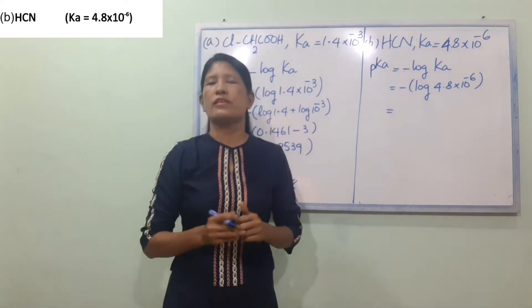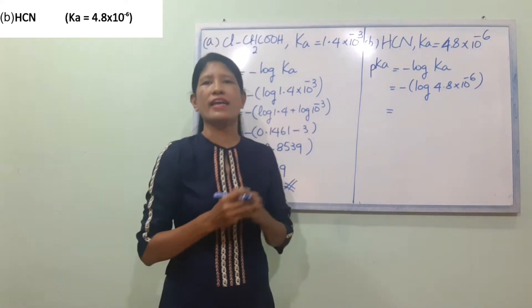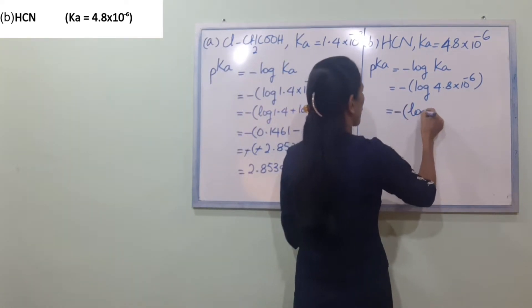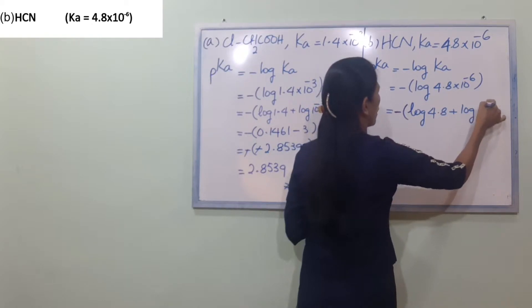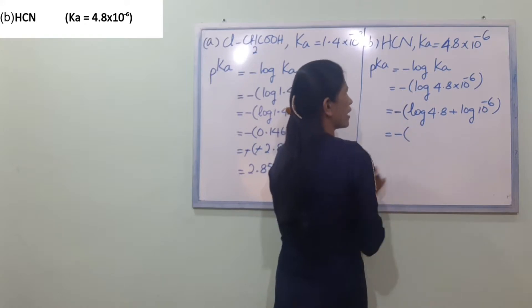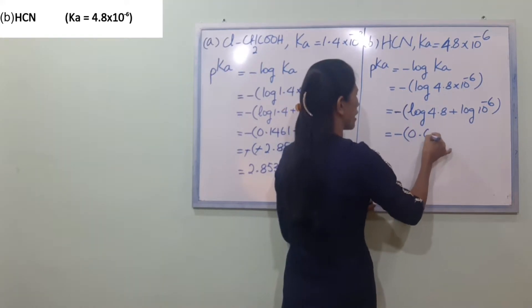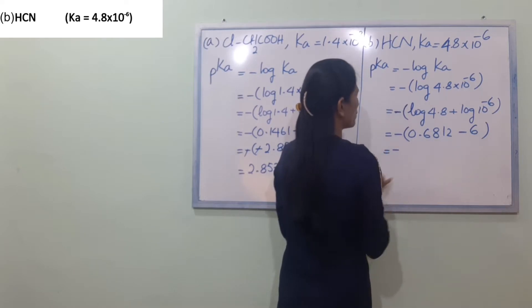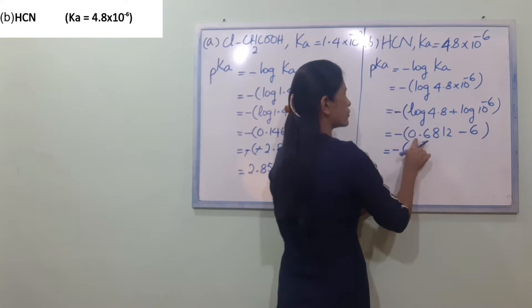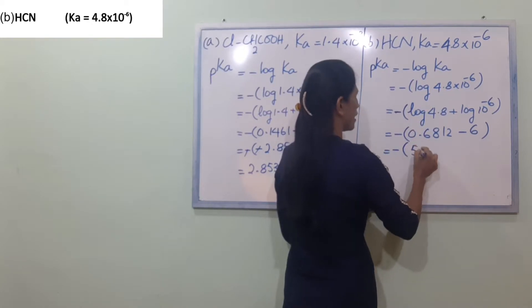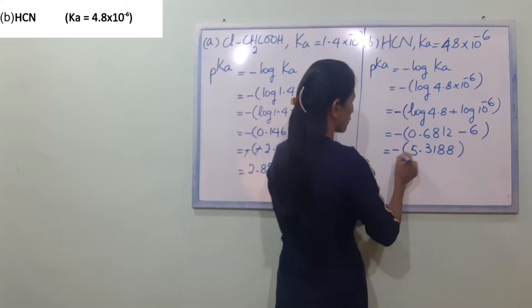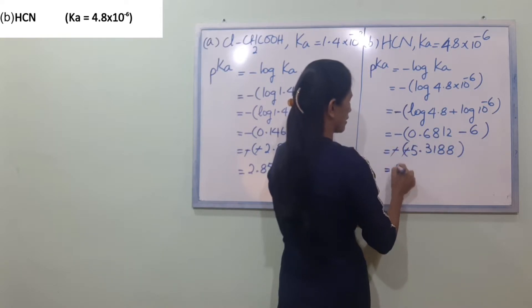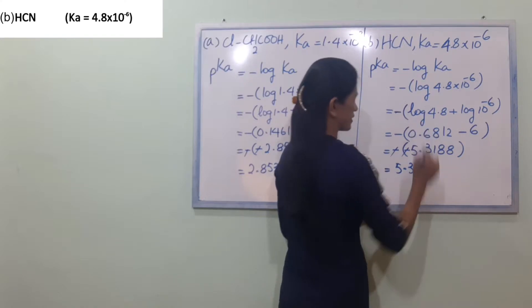This is the number minus 6. So 4.8 into 10 power minus 6 equals minus log 4.8, which gives 0.6812, and so minus 6 with 0.6812 gives us 5.3188.